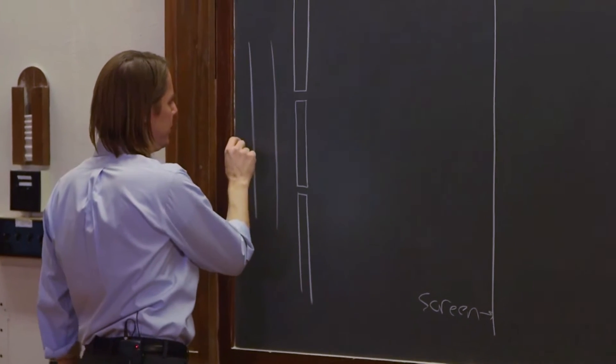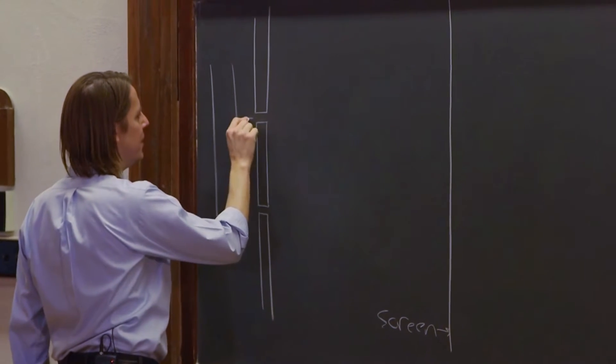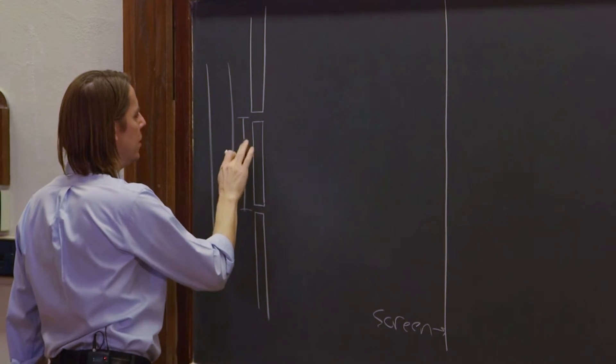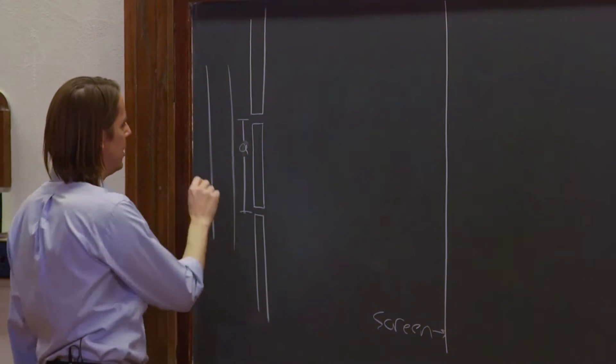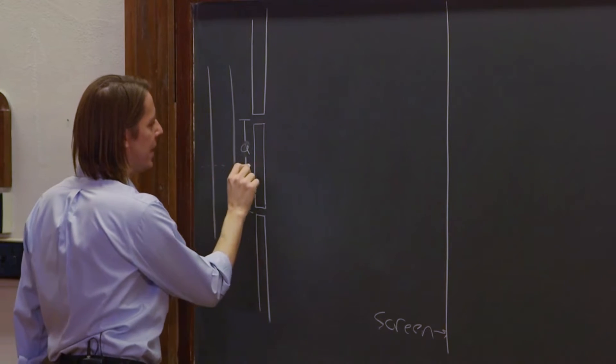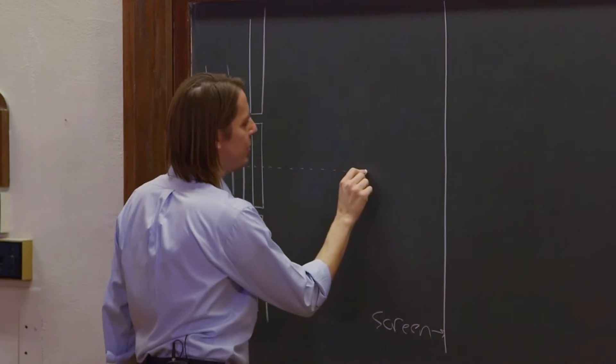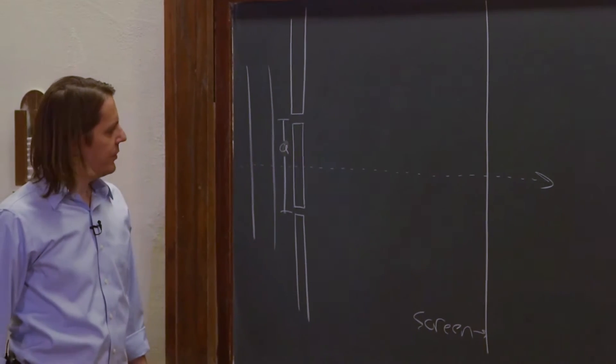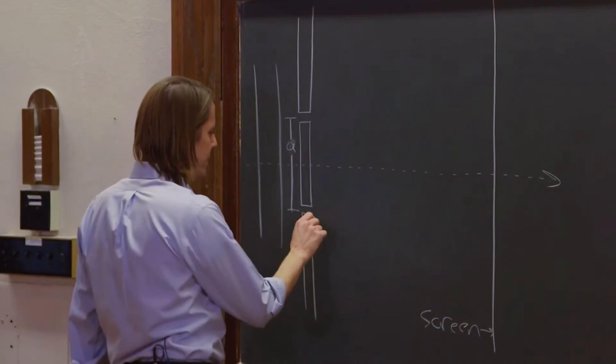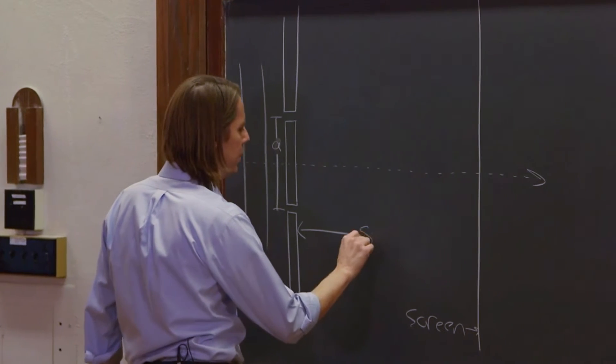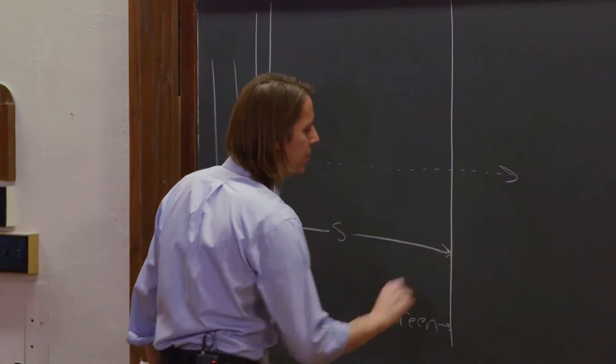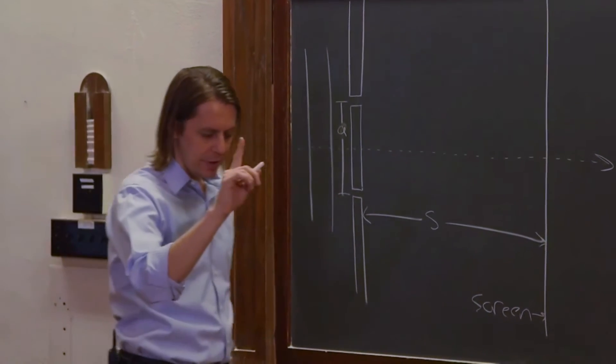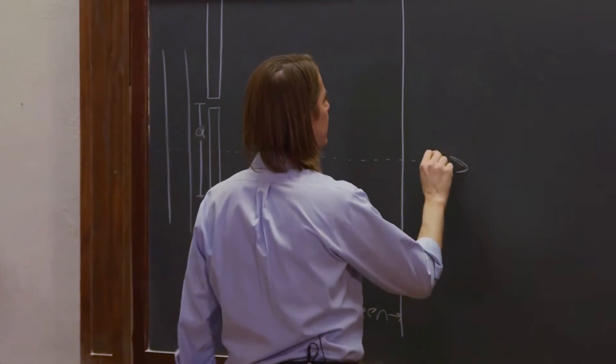What you want to do is first define the separation of these two slits as A, and you want to define an axis right between the two slits. The distance from the slits to the screen, we'll call S, and then as you go up the screen,